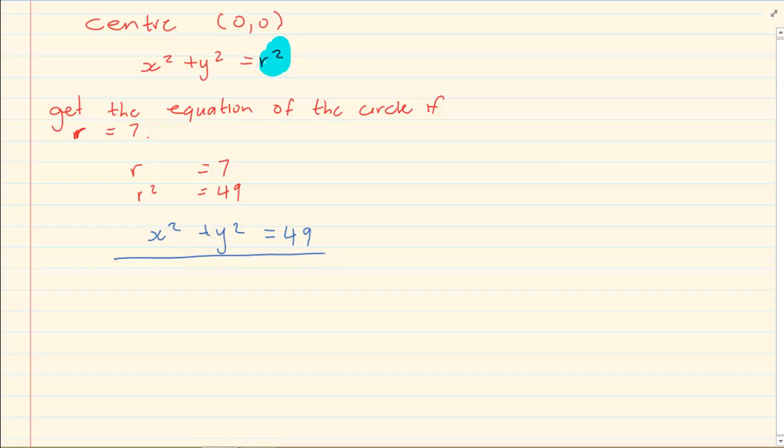But remember when we are doing this, they are telling us get the equation of the circle if r is equal to 7. We are specifically working where the center is (0,0). Therefore we could use x squared plus y squared is equal to 49.